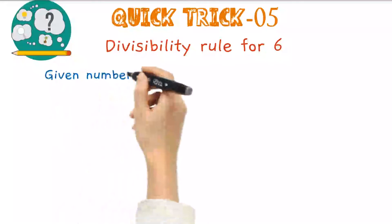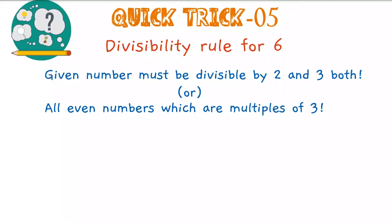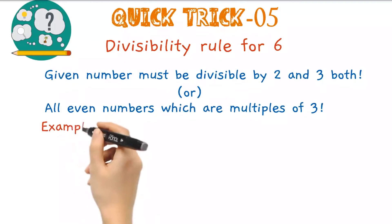Next quick trick 5, this is the divisibility rule for number 6. If the given number is divisible by both the numbers 2 and 3, such a number is divisible by 6. Or else, this can also be given as all even numbers which are divisible by 3 are said to be divisible by 6. Let us have a look at some examples.